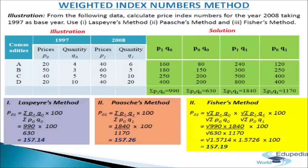Now we will understand the three methods with the help of an illustration. From the following data, calculate price index numbers for the year 2008 taking 1997 as the base year, using Laspeyres' method, Paasche's method, and Fisher's method. A table is given with commodities A, B, C, D along with price and quantity for 1997 and price and quantity for 2008.